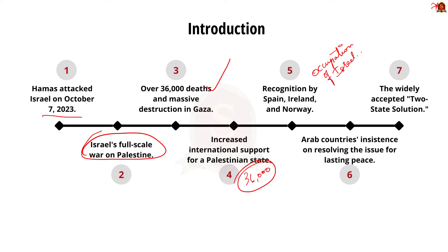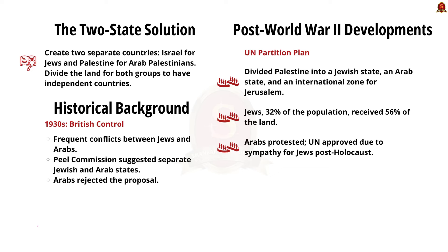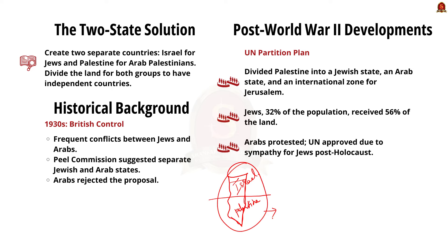The widely accepted solution to this crisis is known as the two-state solution. It is an idea to solve the conflict between Israel and Palestine by creating two separate countries — one for Jewish people, Israel, and one for Arab Palestinians, Palestine — dividing the land so both groups have their own independent countries. During the 1930s, Britain controlled the region of Palestine. There were frequent conflicts between Jews and Arabs, so Britain set up a commission — the Peel Commission — which suggested creating separate Jewish and Arab states. The Arabs rejected this proposal.